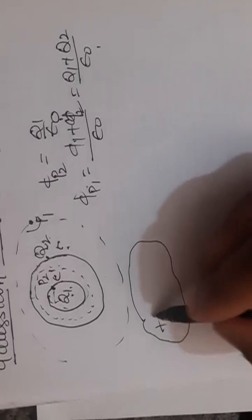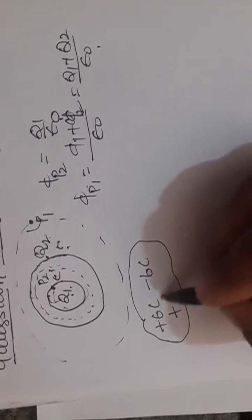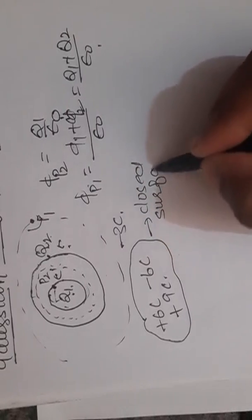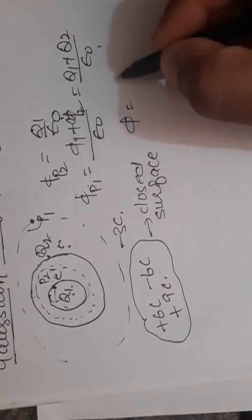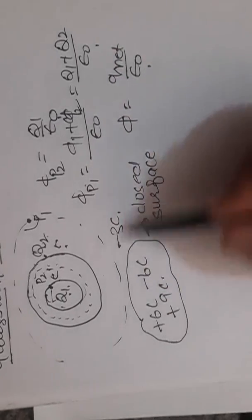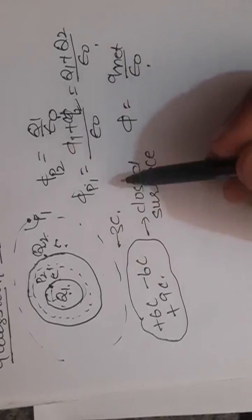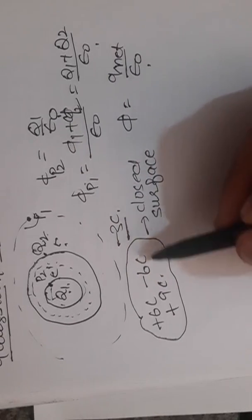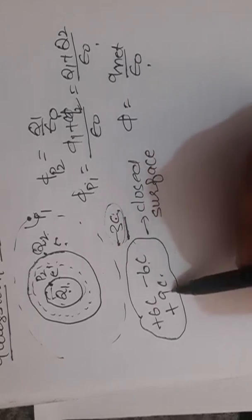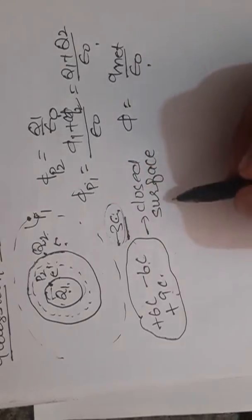Another numerical. Let us suppose this is a closed surface. It is a plus 6 coulomb, minus 6 coulomb, plus 9 coulomb, minus 3 coulomb. I want to find the electric flux given by this closed surface. Flux is equal to net charge divided by epsilon_0. What is net charge inside this? One thing is clear that this charge is outside the closed surface. You will not take this charge. Only take this charge.